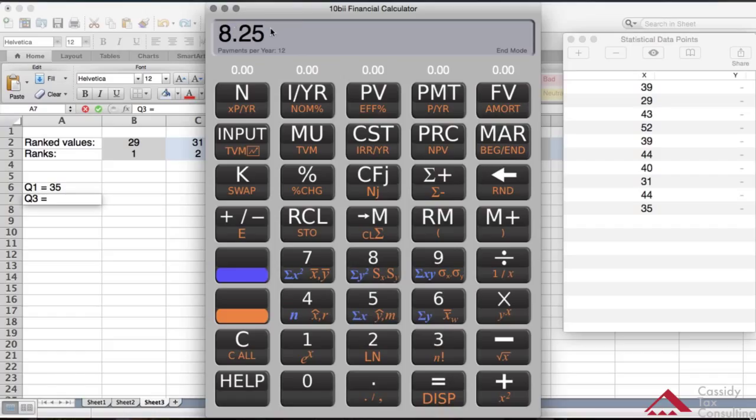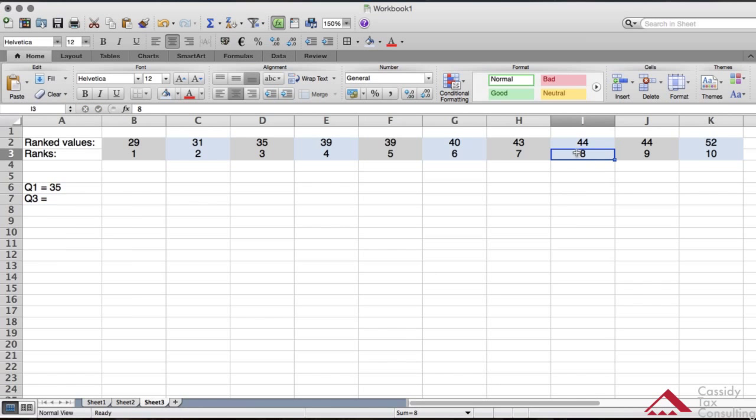So in this case it's going to be rank 8, because you round it to the nearest integer. This is not over 2.5, so you take it to the nearest integer, which is 8. Let's look at 8. Rank 8's value is 44. So the third quartile is 44.